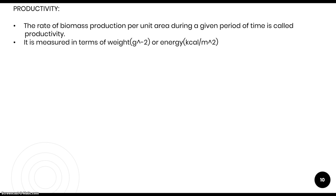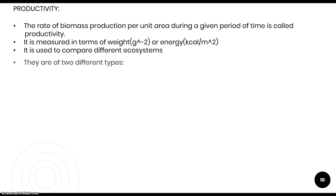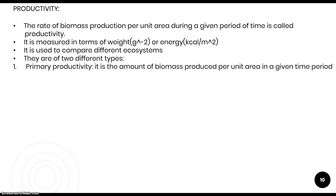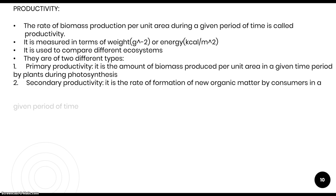There are two types of productivity. Primary productivity is the amount of biomass produced per unit area in a given time period by plants during photosynthesis — so it is totally dealing with the producers. We calculate the amount of biomass produced by plants in a particular area in a particular time, and that is known as primary productivity.